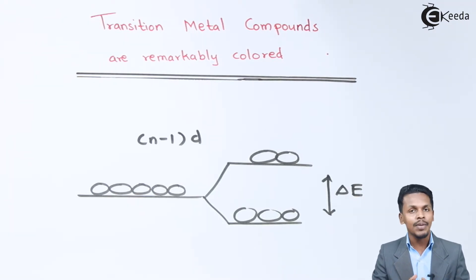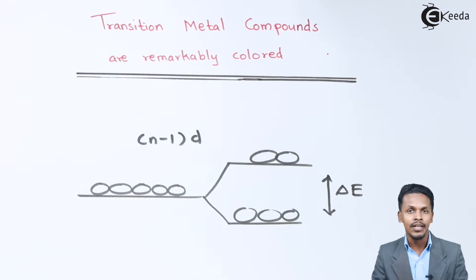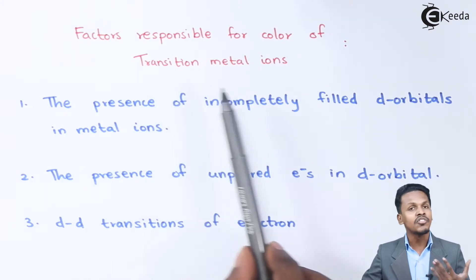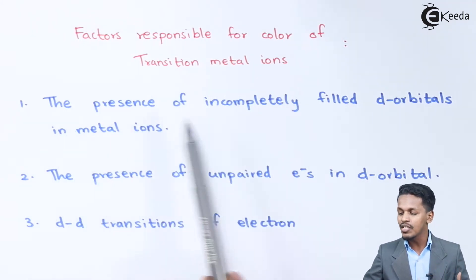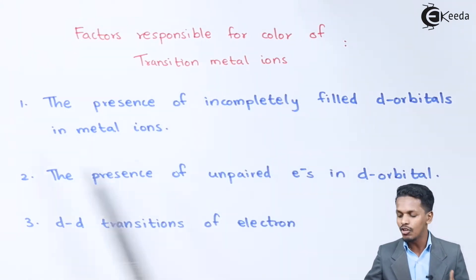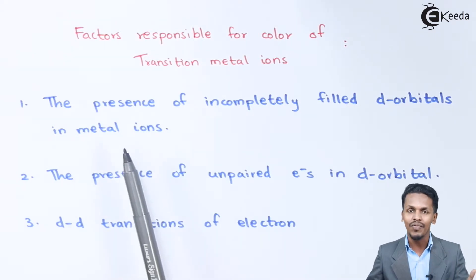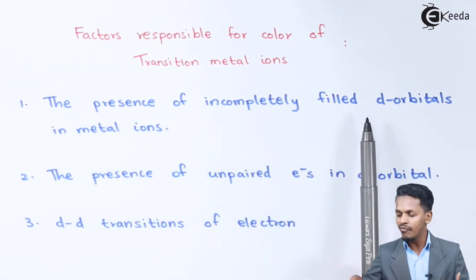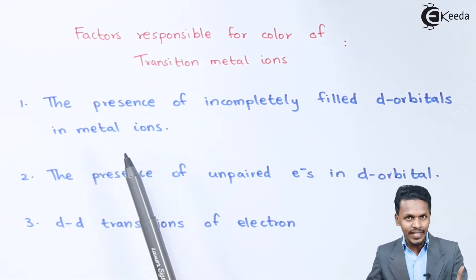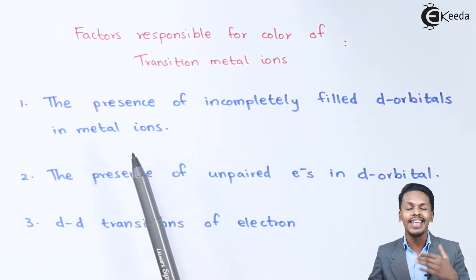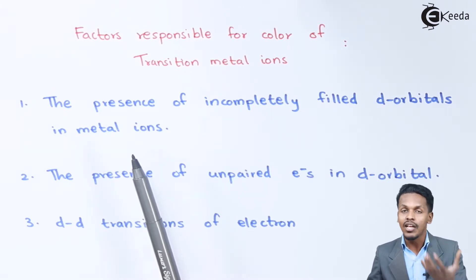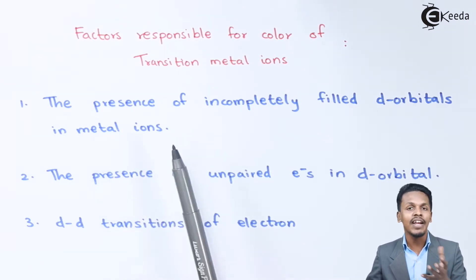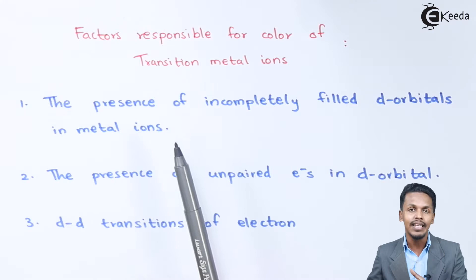Based on that, let us discuss the factors that give transition metal compounds their color. The first factor responsible for the color of transition metal ions is the presence of incompletely filled d orbitals in the metal ion. Because of the incompletely filled d orbitals, unpaired electrons can transfer to a higher energy level, and this kind of transfer is known as d-d transition.